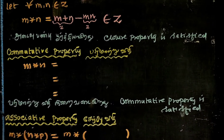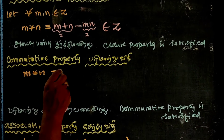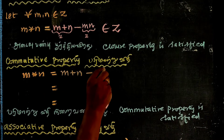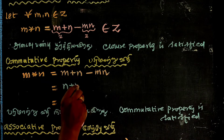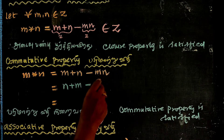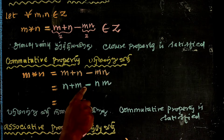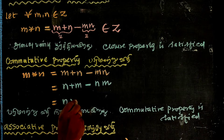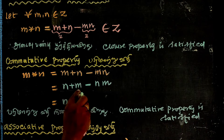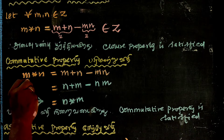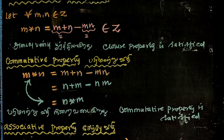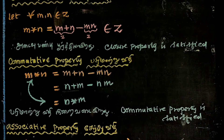Closure Property is satisfied. Now for commutativity: M star N equals M plus N minus MN. When we compute N star M, that is the sum of two numbers N plus M, minus the product of two numbers N times M. Then N star M equals M plus N minus MN. Therefore M star N is equal to N star M. The commutativity property is satisfied.